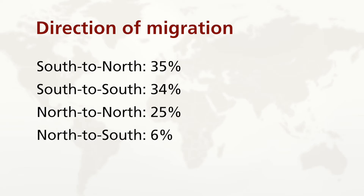What is changing is the direction of migration. In recent decades, the proportion of international migrants who move from less developed to more developed regions — so-called south-to-north migration — has increased. But it's still only about a third of all migrants, at 35%. Another 34% migrate among countries in the south, and 25% migrate among countries in the north. So south-to-north migration is only a third.